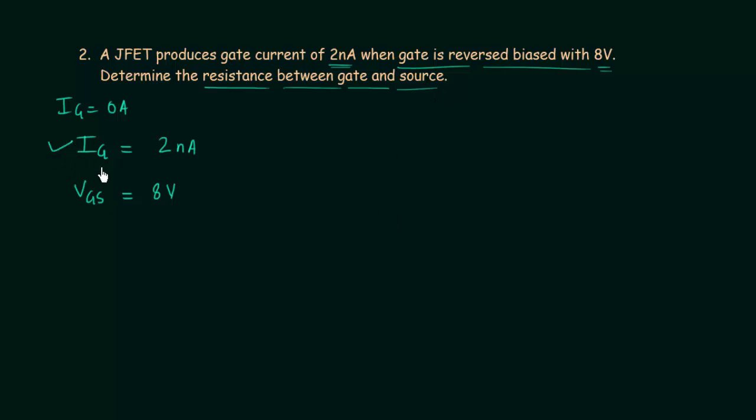Very simple. We know the gate current. We know the gate-to-source voltage. This means we know the potential difference across gate and source, and we also know the current, which is IG. Using Ohm's law, we can easily calculate the resistance RGS. From Ohm's law, VGS is equal to IG multiplied with RGS, or we can write resistance RGS is equal to VGS divided by current IG.